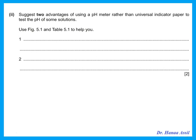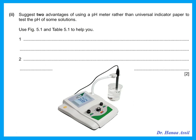State two advantages of using a pH meter rather than universal indicator paper. When using the pH meter it is more accurate — instead of just 11, it gives 11-point-something. Another advantage is that the pH meter can be reused again and again, whereas each piece of universal indicator paper can only be used once.